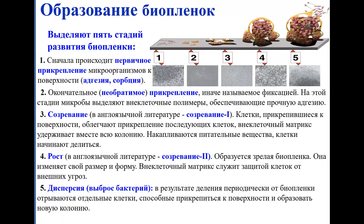Третья стадия — созревание: клетки, прикрепившиеся к поверхности, облегчают прикрепление последующих клеток, внеклеточный матрикс удерживает всю колонию вместе, накапливаются питательные вещества, клетки начинают делиться. Четвёртая стадия — рост, или зрелая биопленка: она изменяет свой размер и форму, матрикс служит защитной оболочкой. Пятая стадия — дисперсия: от биопленки периодически отрываются отдельные клетки, способные прикрепляться к поверхностям и образовывать новые колонии.